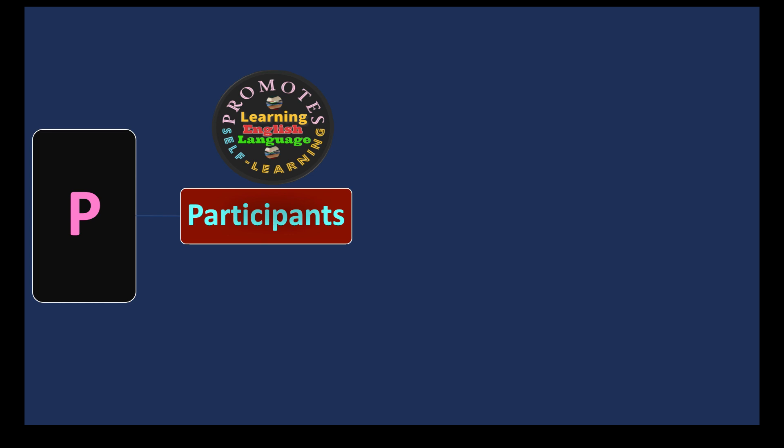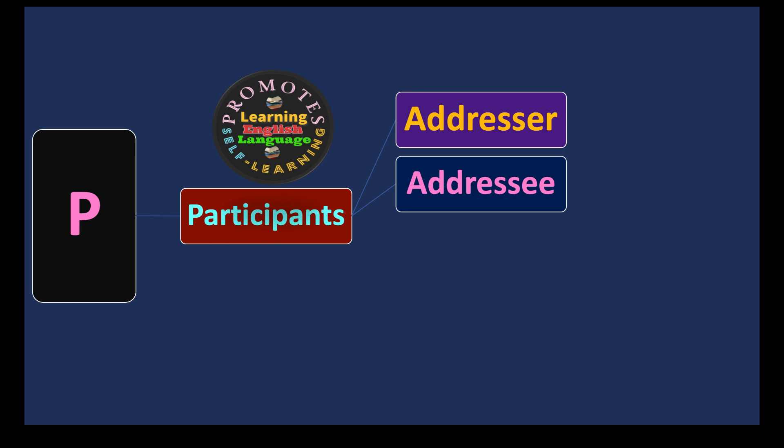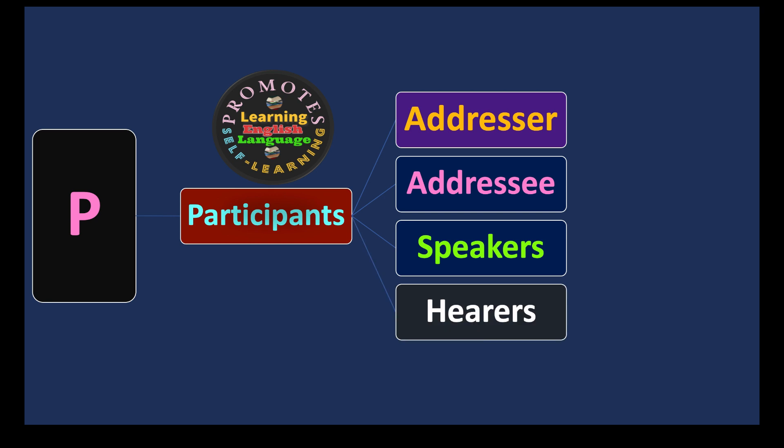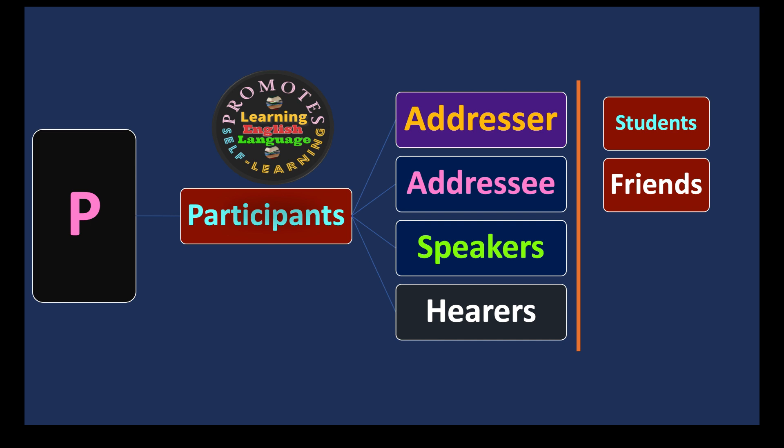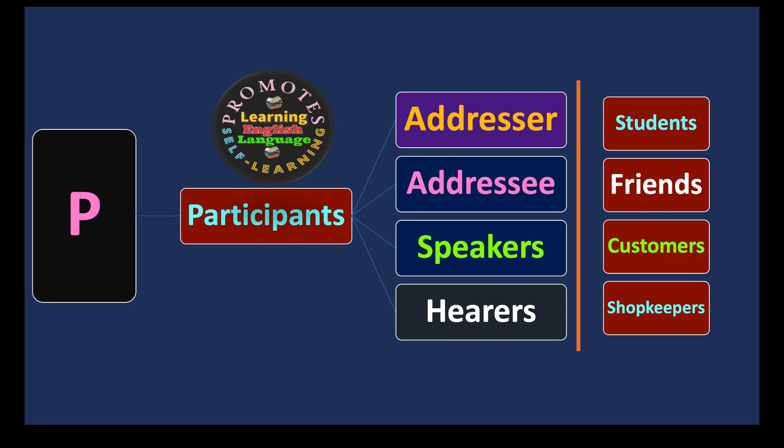P stands for Participants, which refers to the addresser — who addresses and who is being addressed — the hearer, the listener, and the receiver. Broadly, participants may be students, friends, customers, shopkeepers, or members of family; they could be any person involved in the communication.